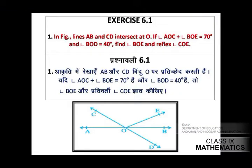Here is the first question. In the figure, lines AB and CD intersect at O. If angle AOC plus angle BOE is equal to 70 degree and angle BOD is equal to 40 degree, find angle BOE and reflex angle COE.